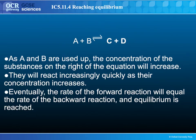Eventually there will be a point where the rate that A and B are reacting to form C and D will equal the rate that C and D react to form A and B. This is the point where equilibrium is reached. It's not that the reaction stops — it's that the rate of the forward reaction is equal to the rate of the backward reaction.